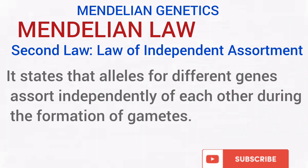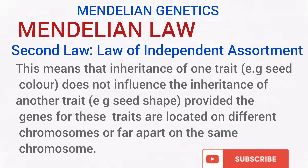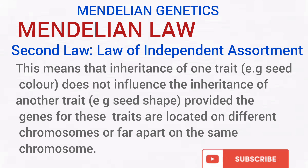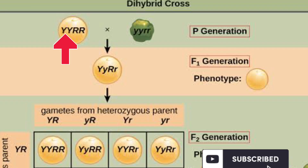Let's talk about the second law — the law of independent assortment. This law is concerned with the inheritance of different traits, not one particular trait. It states that alleles for different genes separate or assort independently of each other during the formation of gametes. So the inheritance of height and, for example, color or shape of pod, assort independently of each other. The inheritance of one trait does not influence the inheritance of the other, provided the genes for these traits are located on different chromosomes or far apart on the same chromosome. As you can see from the diagram, the way color is inherited does not influence the way shape is inherited.